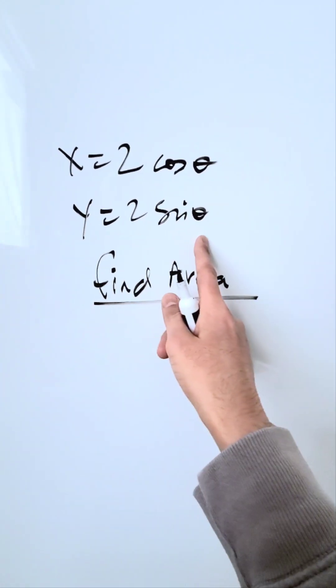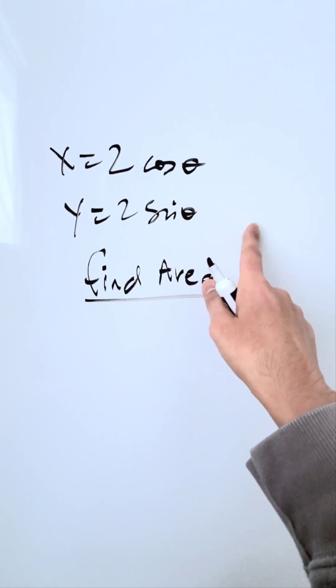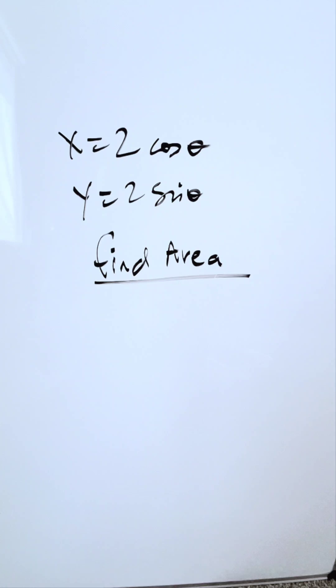I have three variables: x, y, and theta. I will eliminate this variable, this parameter theta, and convert this into a rectangular equation, which is defined only in terms of x and y.